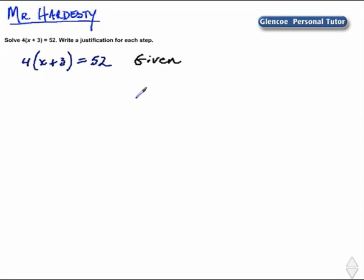Now we'll simplify and solve for x. We'll use the distributive property next, 4x plus 12 equals 52, as we multiply it through by 4. The distributive property is our justification.